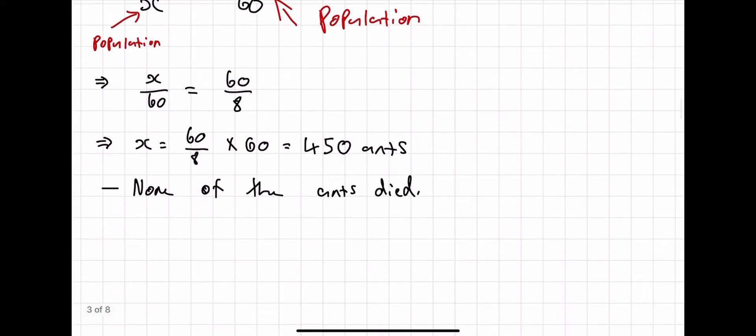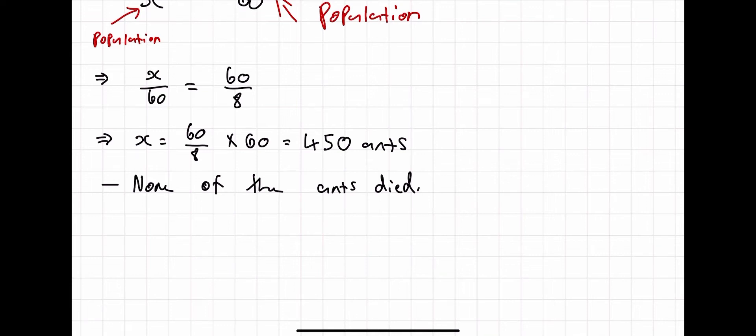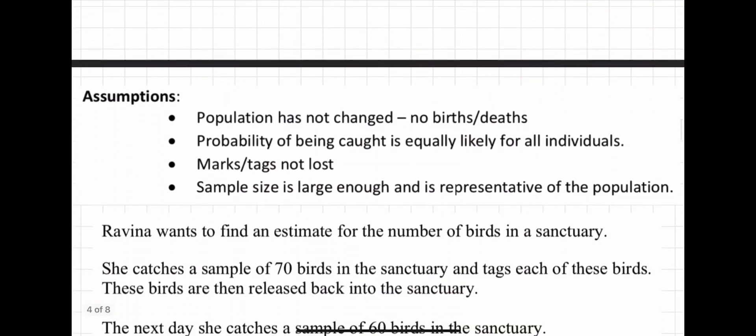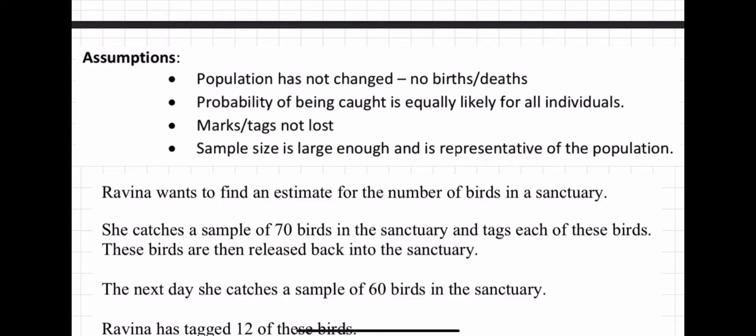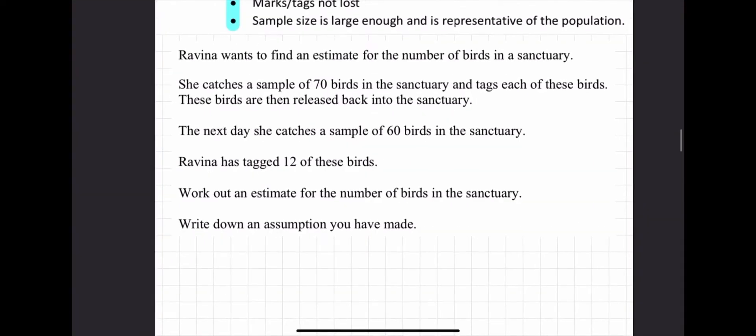And the assumption we can make for this is that none of the ants died. Because if ants died, then the population would be different than the estimated population. I'm now going to pull up some of the assumptions we can use for capture recapture. The population hasn't changed. So, there have been no births or no deaths. This is what we assume when we do a capture recapture question. The probability of being caught is equally likely for all individuals. No tags have come off. So, he marked the ants. If the marks rubbed off, then the population is going to be different than what we have estimated. And the sample is large enough and is representative of the population. So, all of these assumptions here need to be memorised.